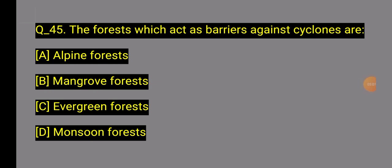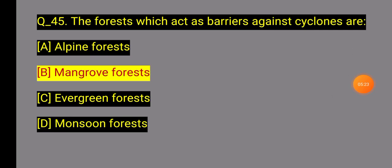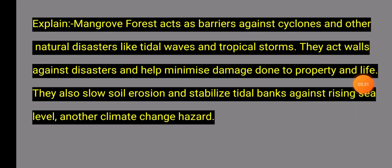Question 45: Which forest acts as a barrier against cyclones? Option B: Mangrove forests act as a barrier against cyclones. Question 45 Explanation: Mangrove forests act as a buffer against cyclones and other natural disasters like tidal waves and tropical storms. They act as two walls against disaster and help minimize damage to property and life. They also stabilize aerial banks against rising sea levels and other climate change hazards.